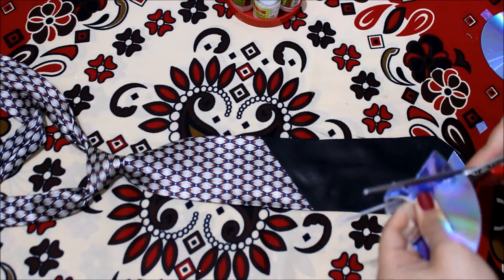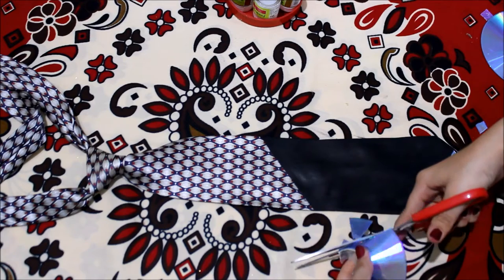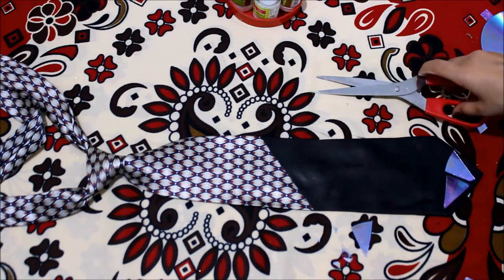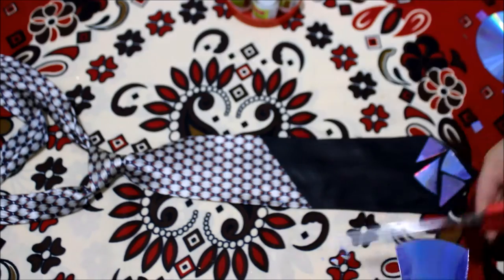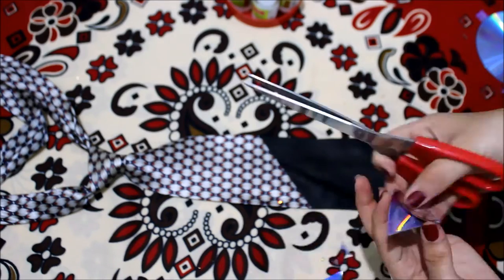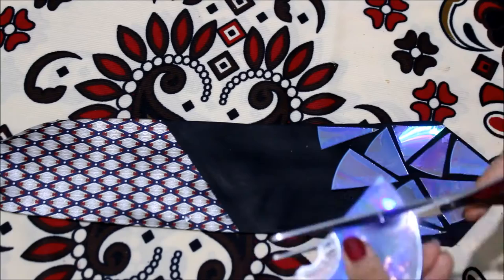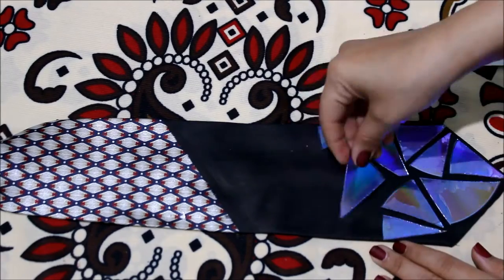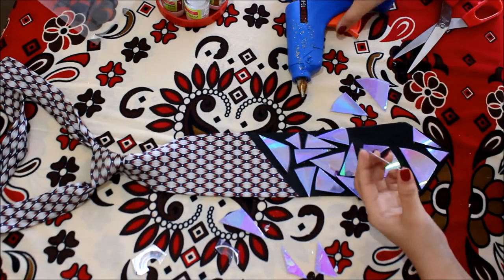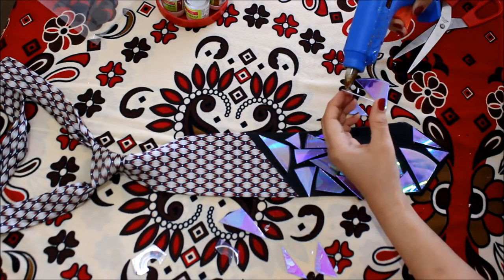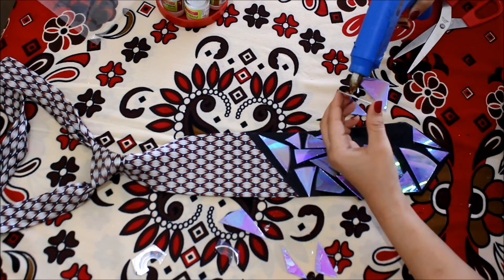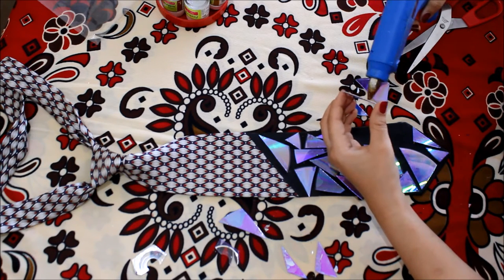Now we start cutting these CDs and sticking them onto the tie with the help of a glue gun. You of course can try different combinations of how you want the CD pieces to be placed on it and go for the best one.